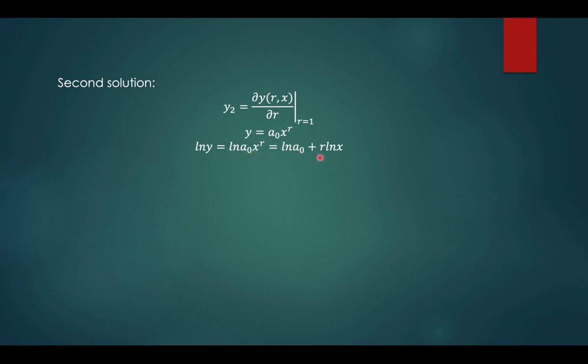You can now differentiate implicitly. ln of y is 1 over y, y prime equals derivative of constant is 0. Then with respect to r, take notice with respect to r, so ln of x will be constant and then derivative of r is 1. So the first derivative is a sub 0 x to the r ln of x. Now evaluate at r equals 1. So your y sub 2 is a sub 0 x ln of x.